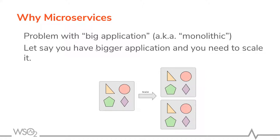If we take a big monolith application, we have one application with four different business functionalities. Whenever we need to deploy, scale, or manage it, we have to take the entire application. For example, if requests to the circle service increase, we have to take the entire component and scale that. That is how we scale monolith applications. Also if something went wrong with the circle application, you have to bring down the entire monolith app, fix it, and redeploy. There are different complexities attached to this.